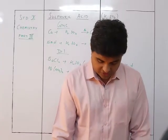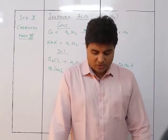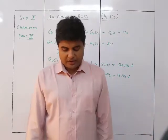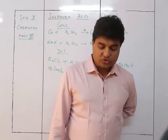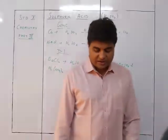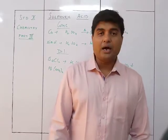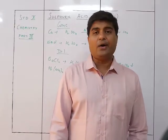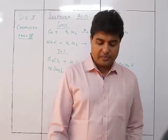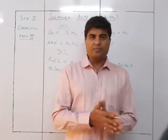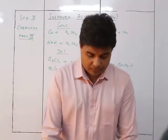A substance that undergoes oxidation acts as a reducing agent — ammonia, a reducing agent, is itself oxidized by CuO or chlorine to nitrogen. A substance that undergoes reduction acts as an oxidizing agent — HNO₃ is an oxidizing agent that itself undergoes reduction to give NO and NO₂. This completes the chapter on sulfuric acid and the study of four compounds.